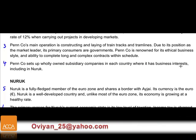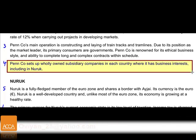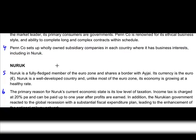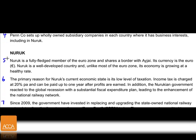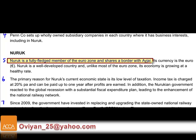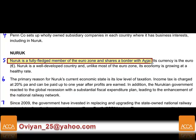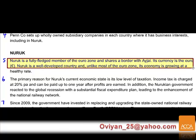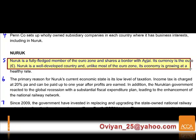Penn sets up wholly owned subsidiaries in each country where it has business interests, including in Nuruk. Nuruk is a fully-fledged member of the Eurozone, sharing a border with Agay. Agay's currency is the dollar, while Nuruk uses the euro. Nuruk is a well-developed country — unlike most of the Eurozone, its economy is growing at a healthy rate.